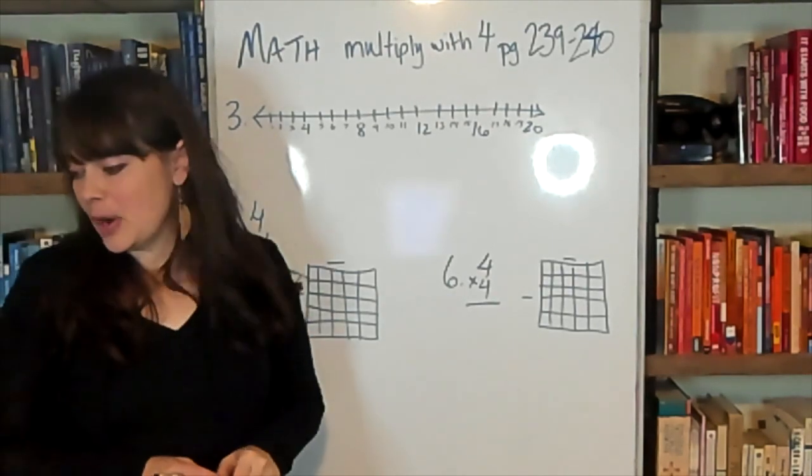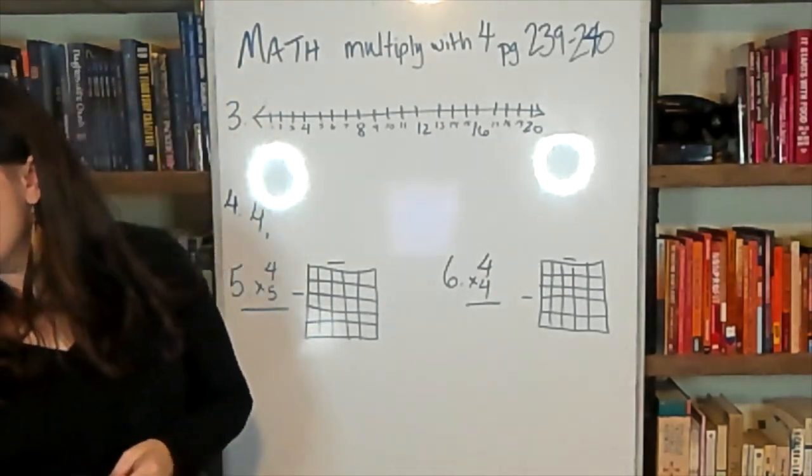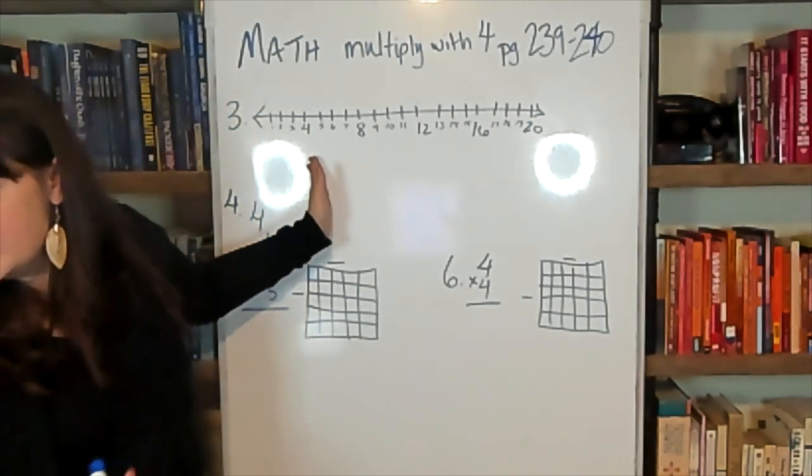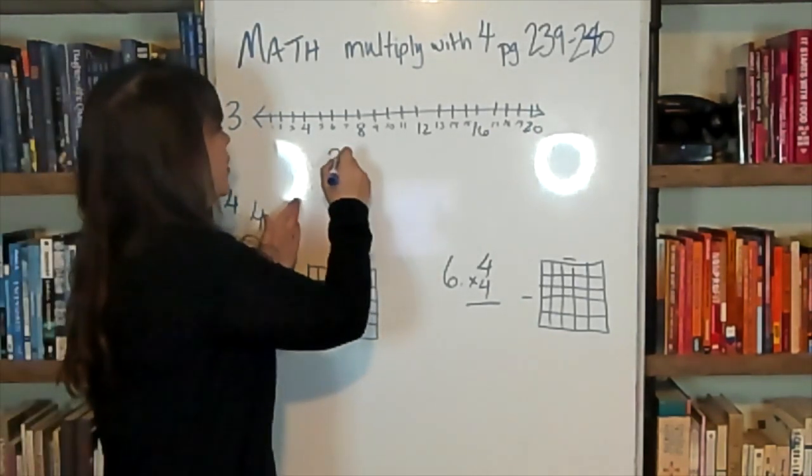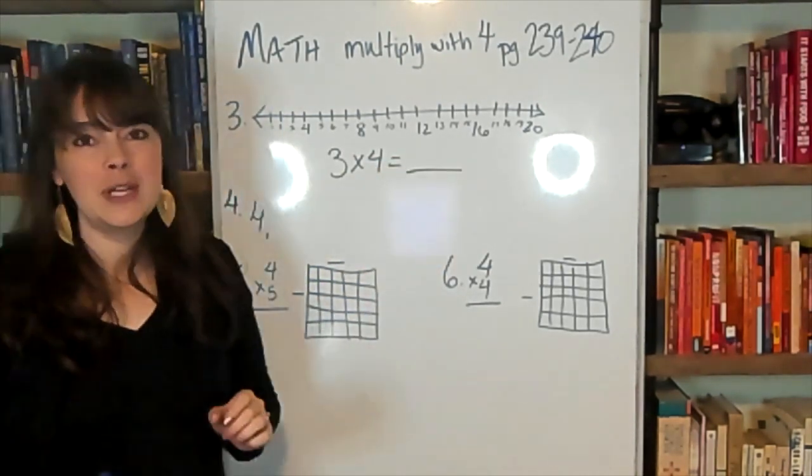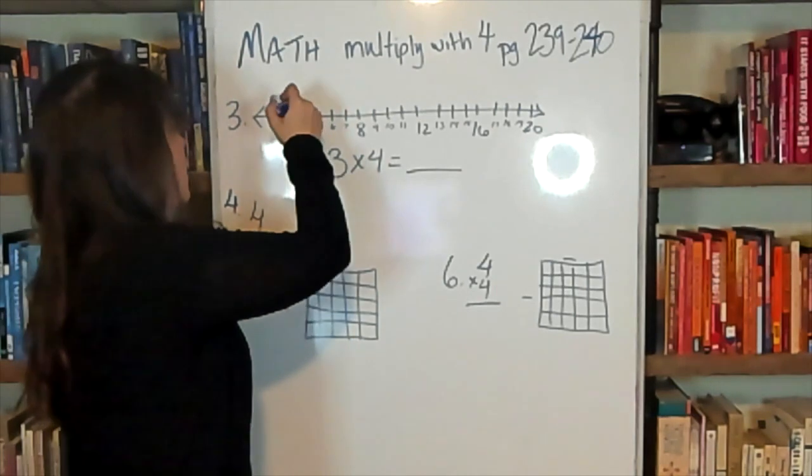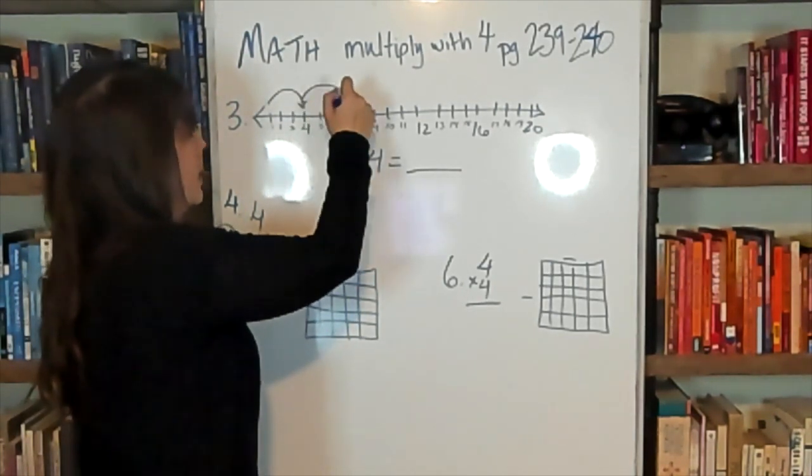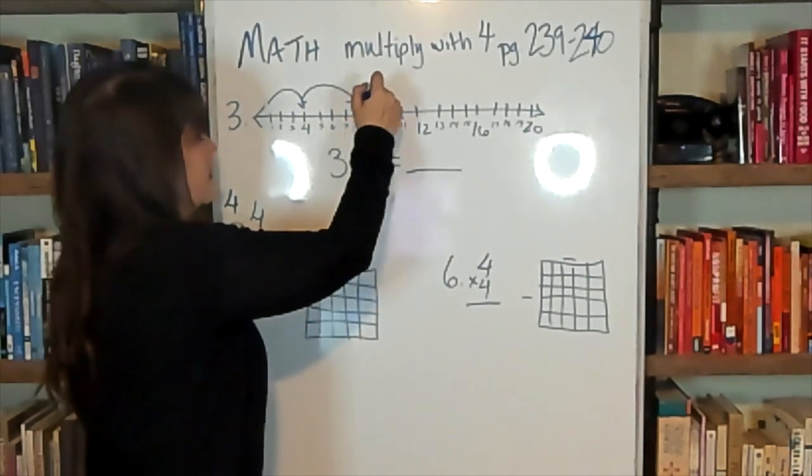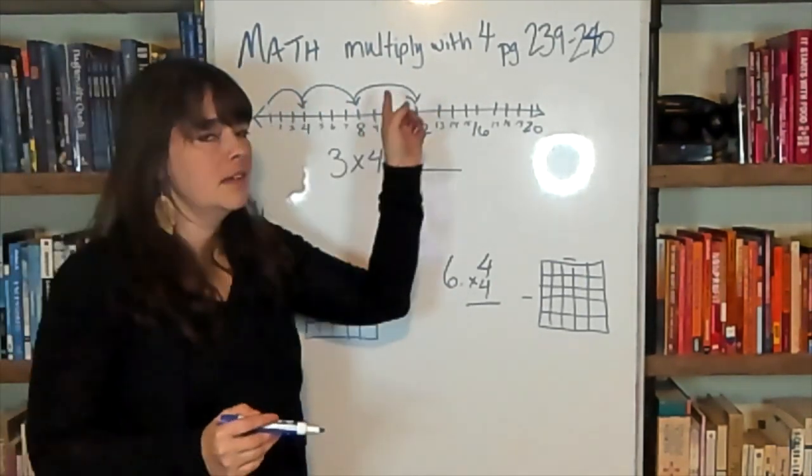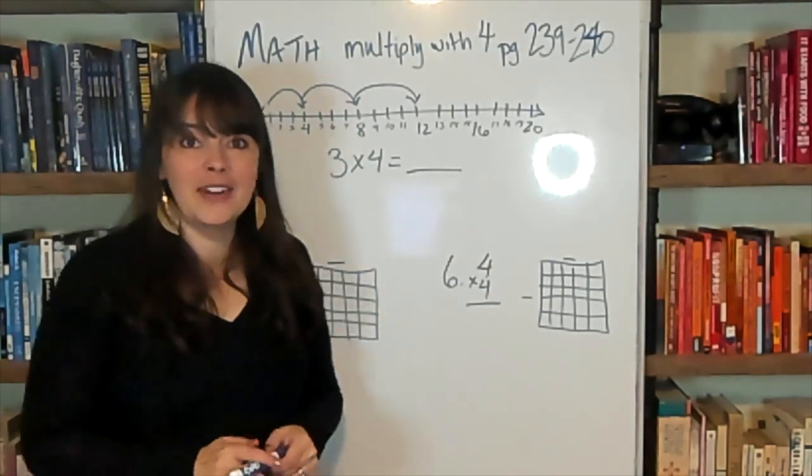We're going to start with a number line problem. It's number 3. I didn't have room on my number line for the very first one, so we'll have 3 times 4. We're going to solve this. We're going to count by 4's. We're going to use the number line going by 4's. We're going to say 4, 8, 12.